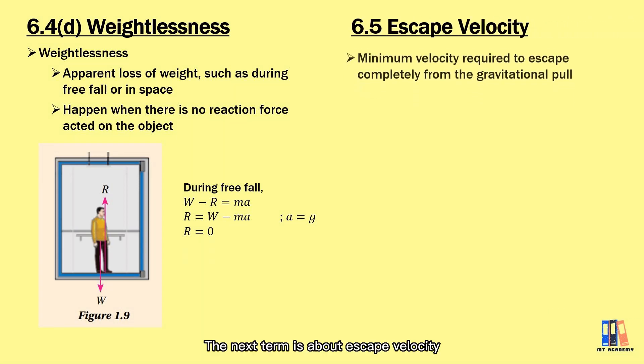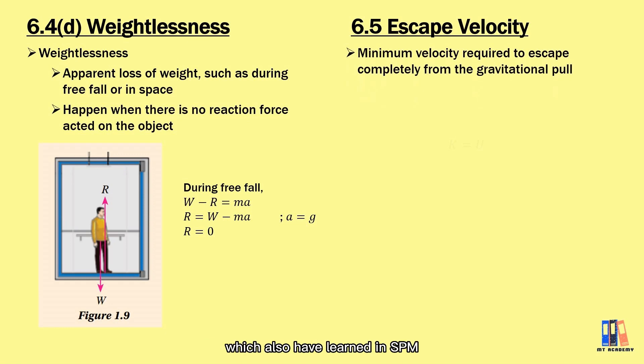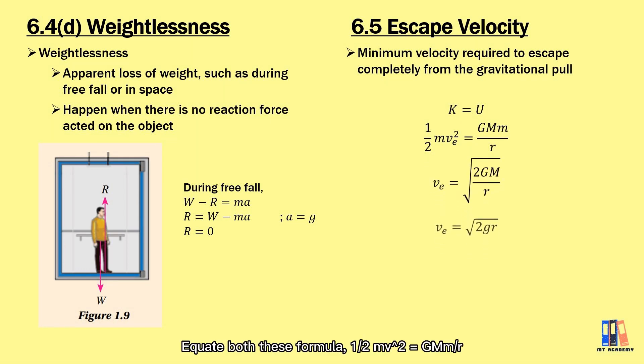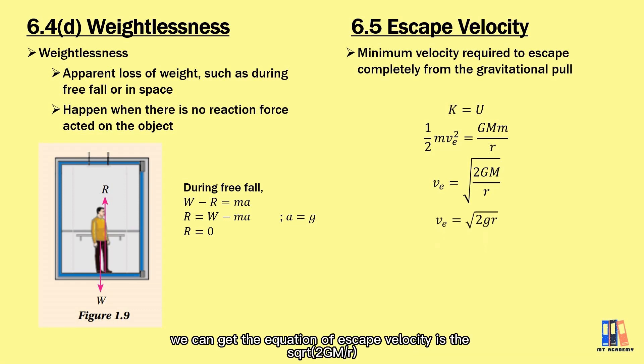The next term is about the escape velocity, which you also have learned in SPM. It is the minimum velocity required to escape completely from the gravitational pull. The derivation is based on the conservation of energy, that kinetic energy will be converted to the potential energy. Equate both formulas, half mv² equal to GMm over r, we can get the equation of escape velocity is the square root of 2GM over r, which is also equal to square root 2gr based on the derivation in earlier of this video.